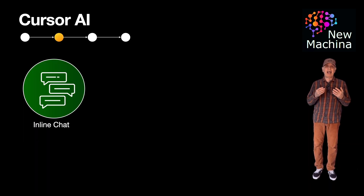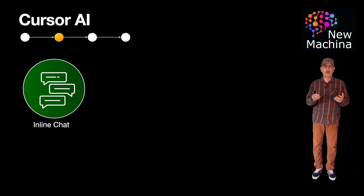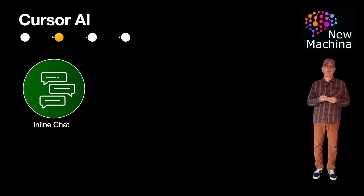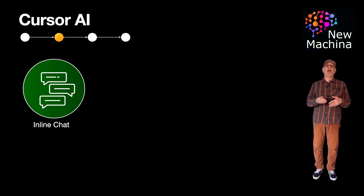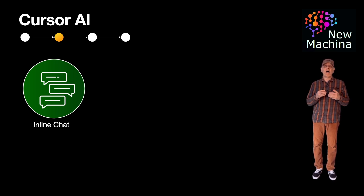Cursor AI supports inline chat and autocomplete. You can highlight code and ask questions like, "What does this function do?" or "Can you refactor this code block for me?" The AI code assistant will reply inline, often with editable suggestions. Autocomplete is enhanced with LLMs to offer better context-aware code completions.